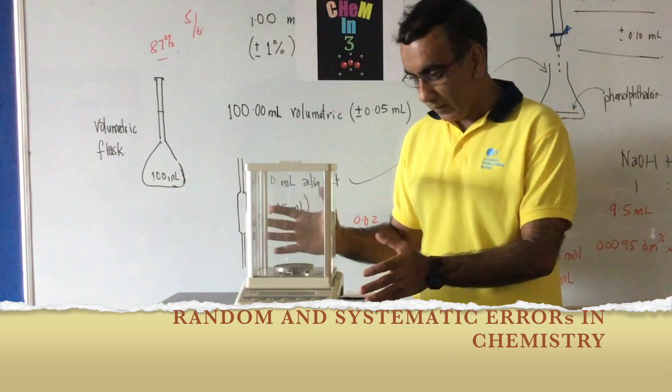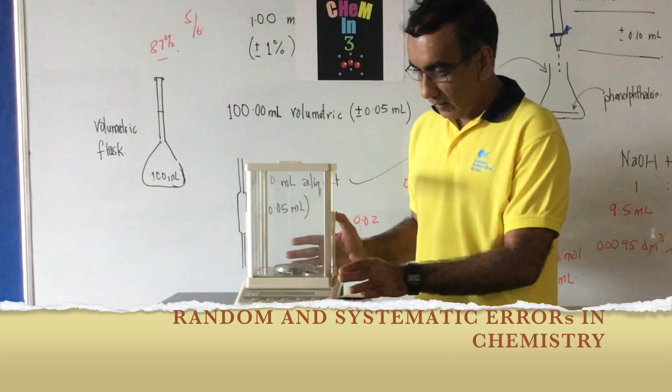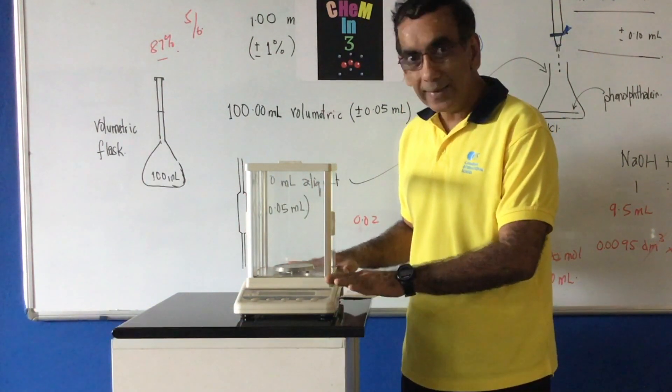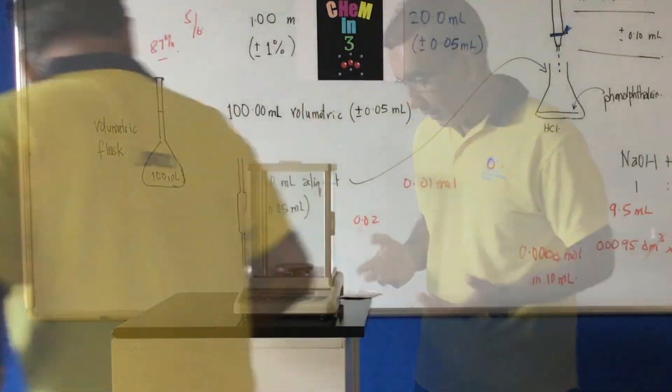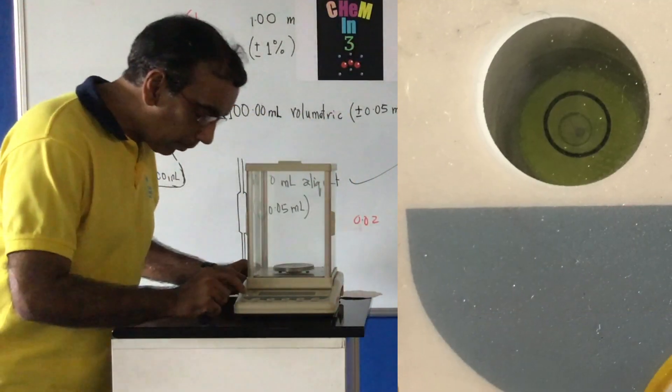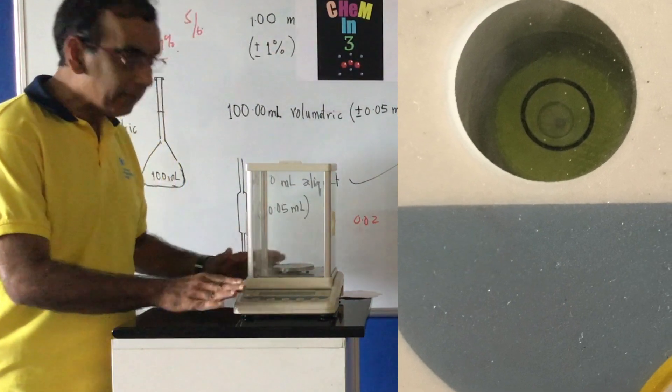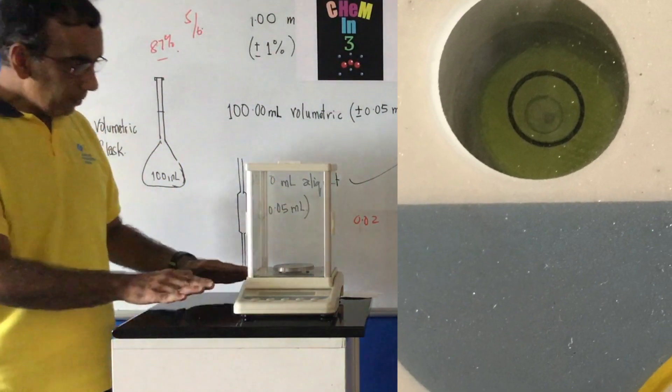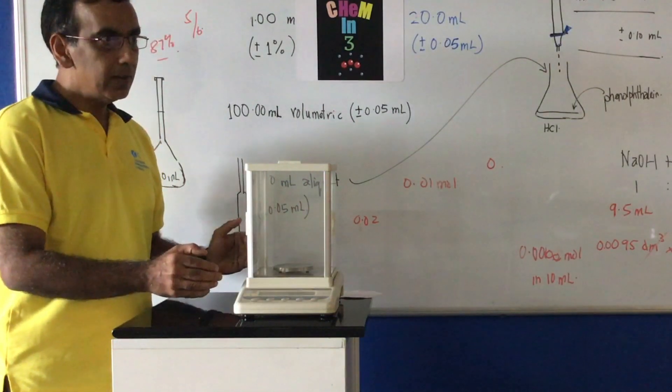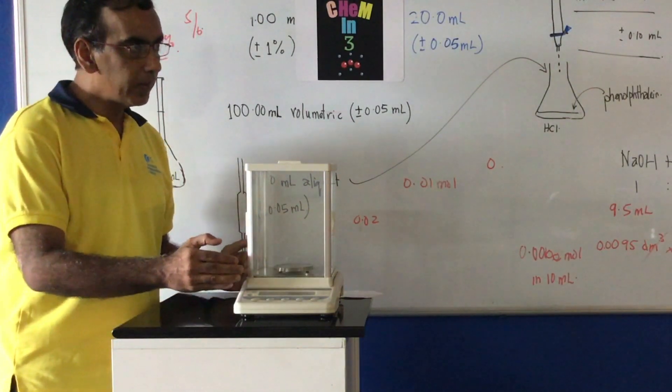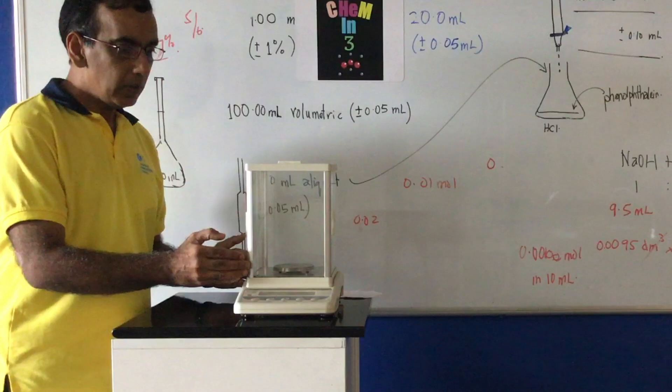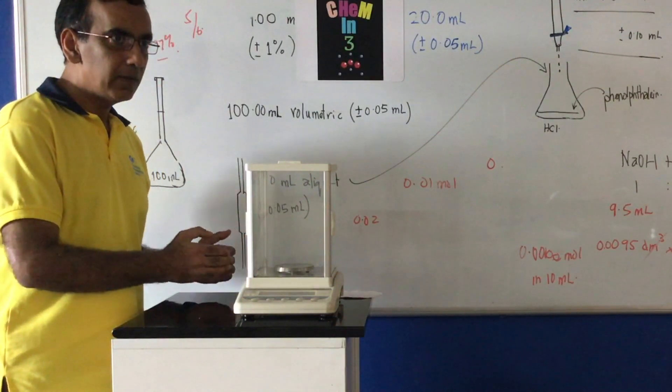Before I begin to use this balance, it's important that I ensure that it's properly leveled on the surface. The balance does come with a tiny bubble in here that allows me to know if it's level on the surface. If the balance is not leveled, then this can lead all of my readings to be off by a particular factor.